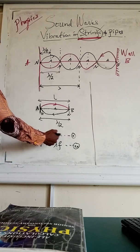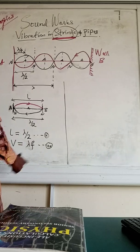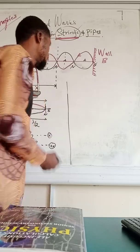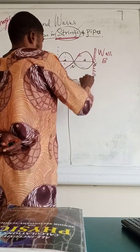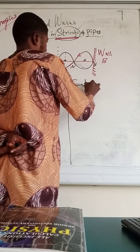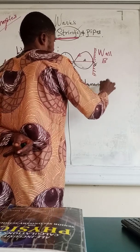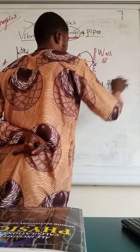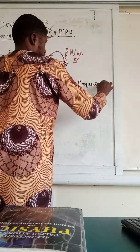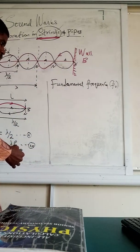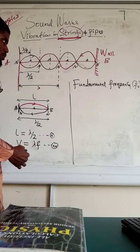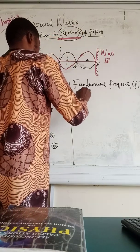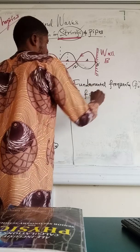Your L equals lambda over 2. From here, V equals lambda F. Now we want to generate what we call fundamental frequency. Fundamental frequency is given as F naught. From this equation, let F be equal to F naught.